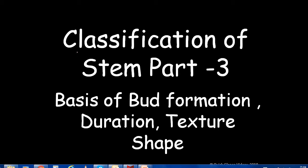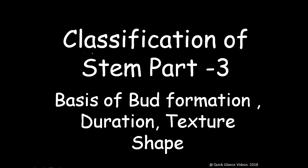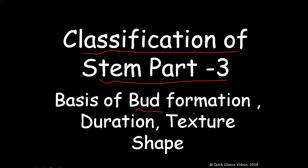Hello friends, welcome to Quick Glance Videos. In this video we will cover classification of stem, part 3. In the previous two videos we covered classification on the basis of form and branching, and this video will cover classification on the basis of bud formation, duration, texture, shape, and surface — completing the full morphological classification of stem.